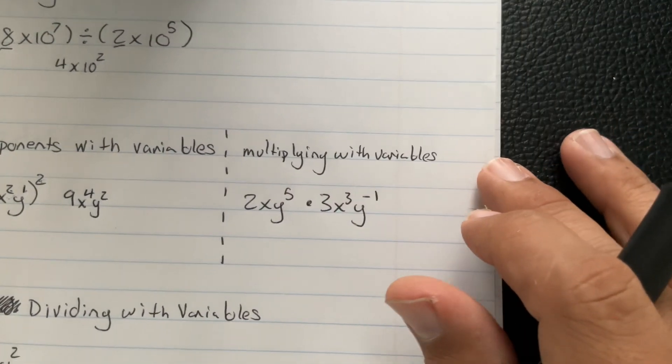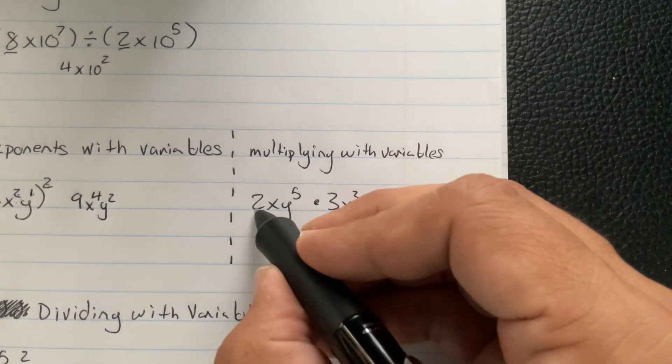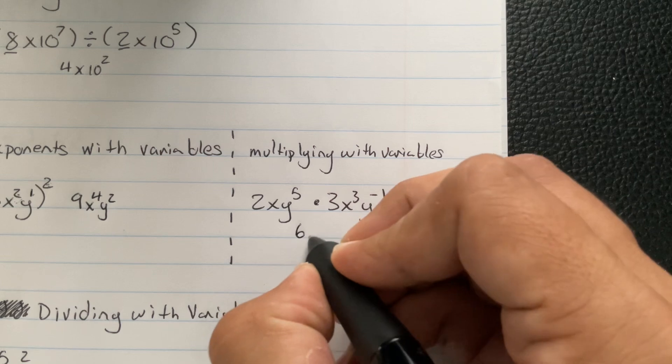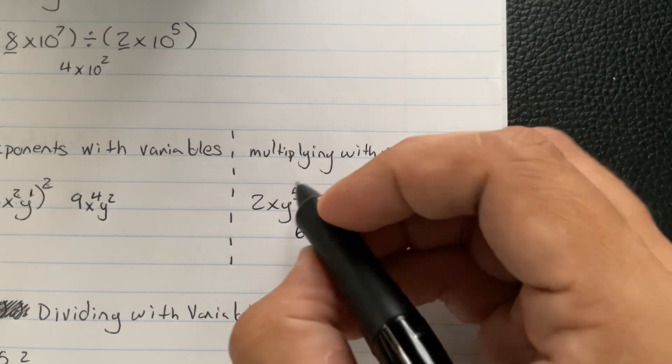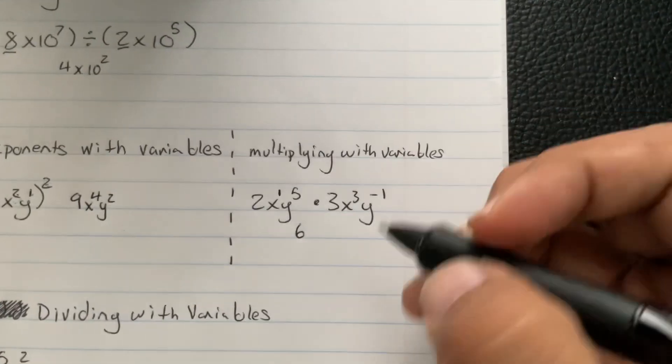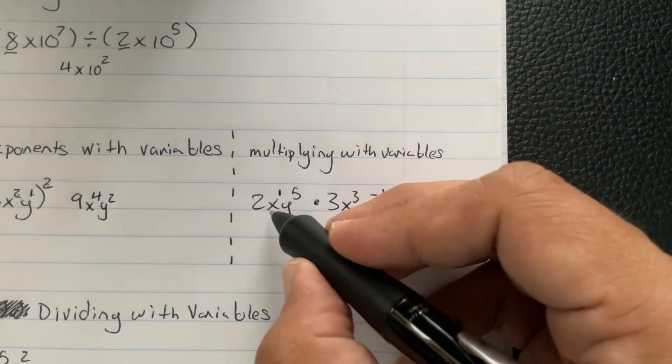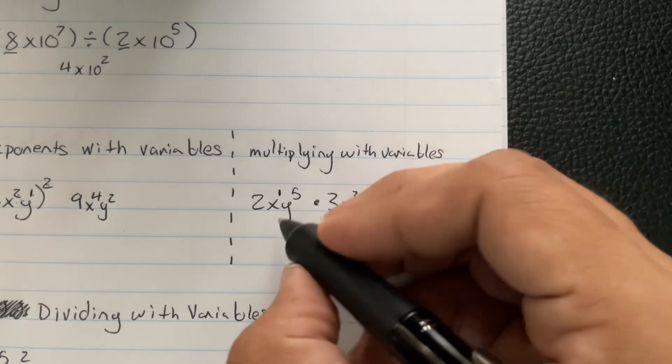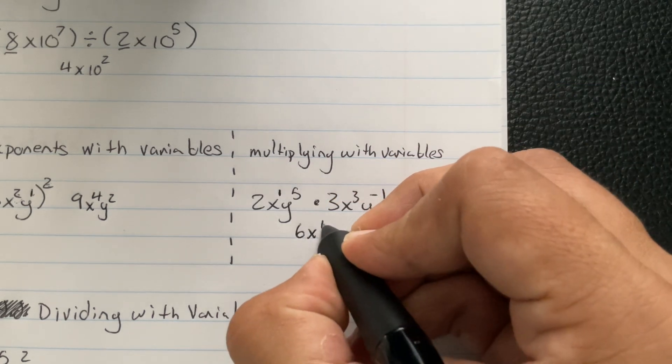All right. Multiplying with variables. 2 times 3 is going to be 6. Exponents that don't have an exponent, I'm just going to put a 1 here. So 2 times 3, x¹ times x³, exponents are going to add, and it's going to be x⁴.